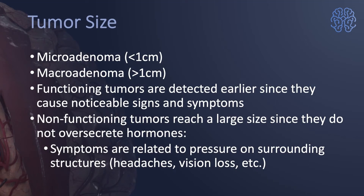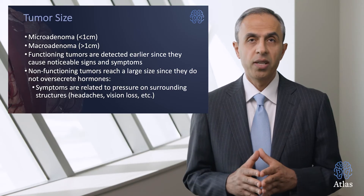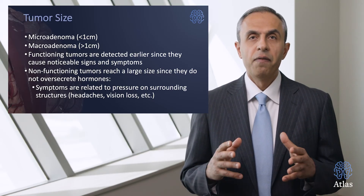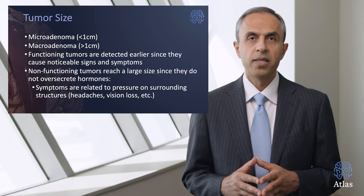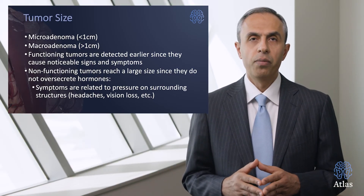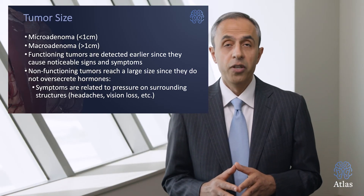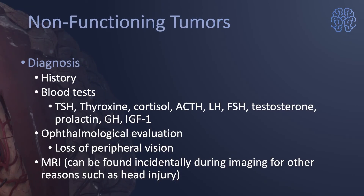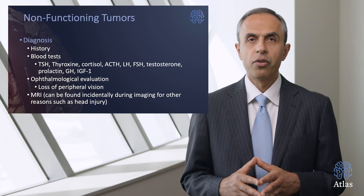An important definition: a microadenoma is less than one centimeter in its largest diameter, and a macroadenoma is more than one centimeter. Functional tumors are typically found earlier because they produce hormones that lead to noticeable signs and symptoms. Non-functioning tumors must reach a much larger size before being detectable through pressure on the eye, headaches, or vision problems. Blood tests including TSH, thyroxin, cortisol, ACTH, LH, FSH, prolactin, growth hormone, and IGF-1 are all effective in determining what kind of tumor is present.